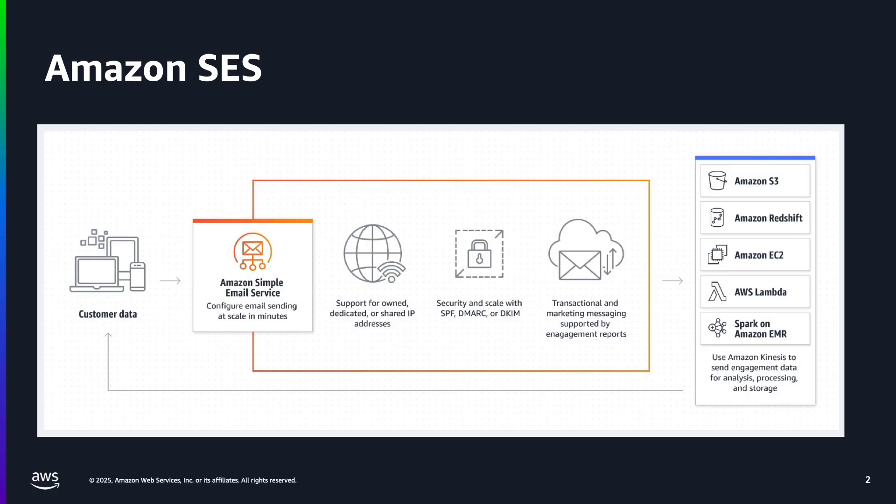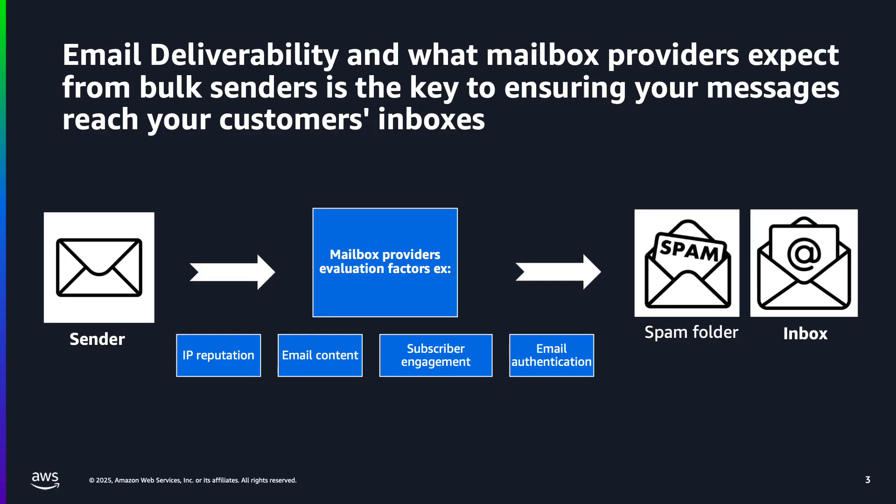Amazon SES is a cloud email service provider that can integrate into any application for bulk email sending. Senders from small startups to large enterprise accounts can use SES to reach their customers, but getting messages to the recipient's inbox can be tricky. Email deliverability refers to the ability to successfully deliver emails to recipient's inboxes.